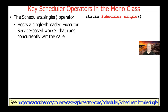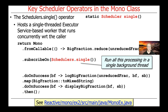As we showed in the example before, it arranges to run that Mono chain in a single background thread. When we called subscribeOn, we passed in schedulers.single, and that arranges to run all the processing in a single background thread — fromCallable, doOnSuccess, map, doOnSuccess, and then — all executed in the single background thread returned by the call to schedulers.single, which is a factory method.